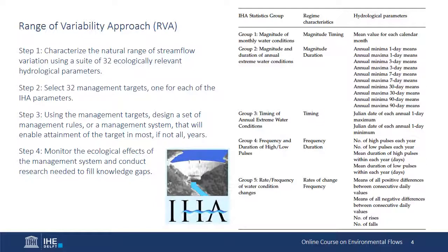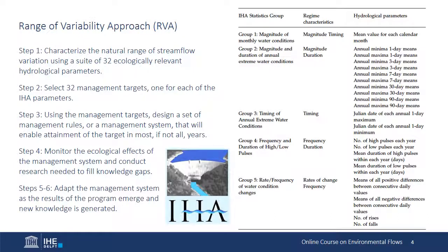Step four highlights the importance of monitoring and continuing to increase our knowledge base through research. Given its purely hydrological basis, the RVA is intended only to set initial river management targets. Step four sets in motion a process of refining the targets by monitoring whether management interventions are meeting the targets each year and by conducting research to fill recognized knowledge gaps. From this hydrological basis, the approach to quantifying and managing e-flows will evolve into a holistic approach. Steps five and six reinforce this adaptive approach, emphasizing specifically the need to carefully review annual monitoring data and revise the management system based on what is learned and new research inputs.